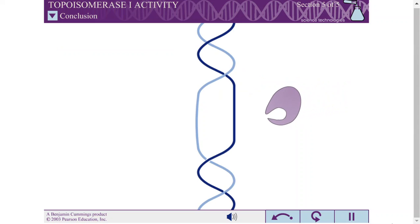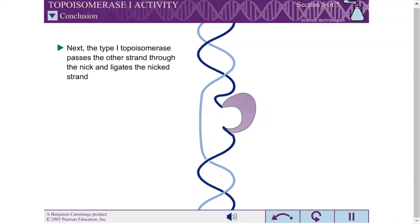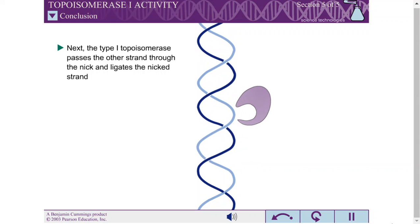In order to increase the linking number of a DNA molecule, many type I topoisomerases must first bind to a segment of DNA in which the two strands are melted. The topoisomerase then cleaves one of the two strands. Next, the type I topoisomerase passes the other strand through the nick and ligates the nicked strand.